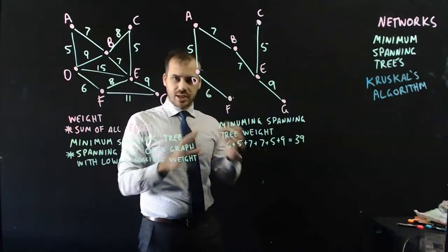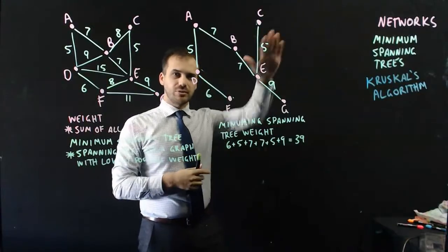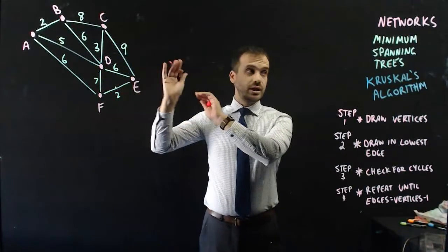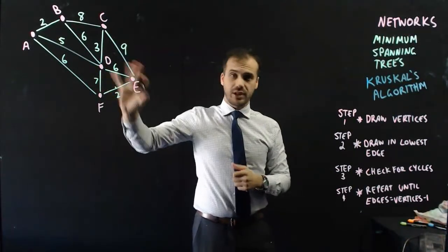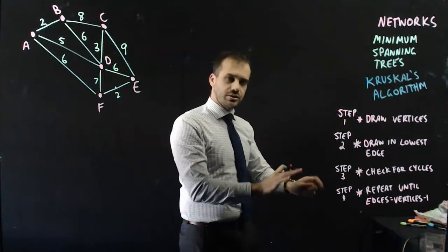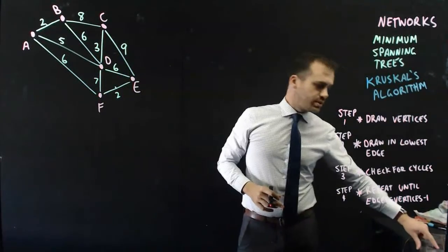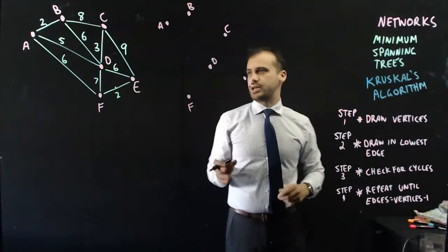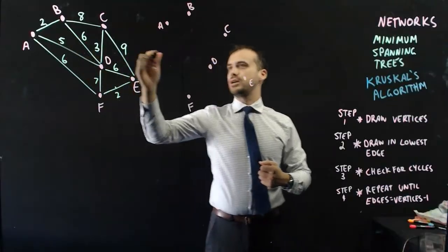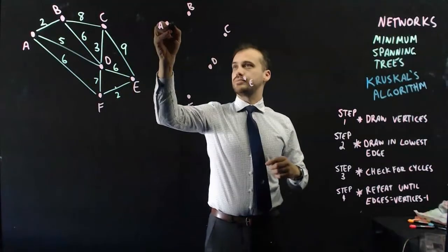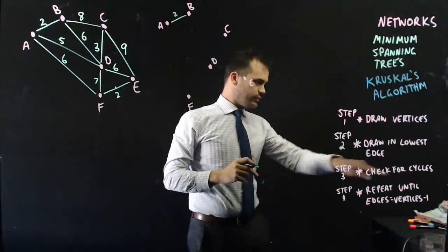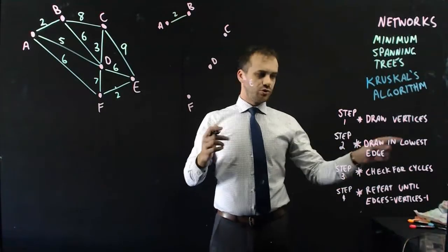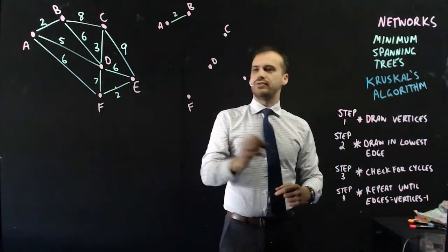I'm going to do one more example of Kruskal's algorithm, and I'm going to write down my steps here, and then we're going to do it. So, here's my new graph, and I'm going to come up with the minimum spanning tree for that graph. Here are my Kruskal's steps. So, the first step is to draw in the vertices, so I'm going to do that. Okay, next up, I'm going to draw in the lowest edge. So, there's a 2 there, and there's a 2 there. It doesn't matter which one I choose. 2. I'm going to check for cycles. Obviously, there's one edge, so there's no cycles. Next up, draw in the lowest edge. So, just keep repeating step 2 and 3 until we're finished.